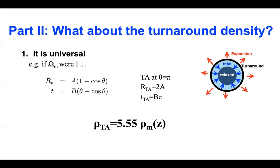This universality doesn't care about what's inside — whether there is a collapsed cluster or how big it is. As long as this shell is turning around, the density inside is 5.55 times the mean density of the universe. This fact is actually where the magical number 18π² comes from, which gave us the famous R200 — the virial radius of the cluster being about 200 times the mean matter density of the universe. The same universality is at the heart of this.